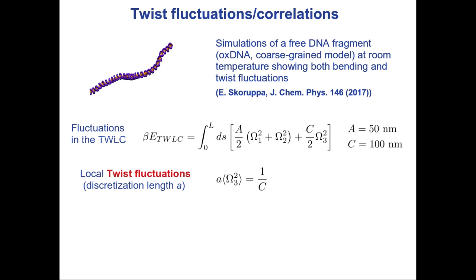What we want to discuss here are the twist fluctuations. If we discretize this integral and split it into segments of discretization length A, this is a Gaussian model, so the average of omega_3 squared — the variance of omega_3 — is simply given by 1/C. We see directly that this is a Gaussian distribution. This describes the local twist fluctuations, the fluctuations in omega_3 locally.